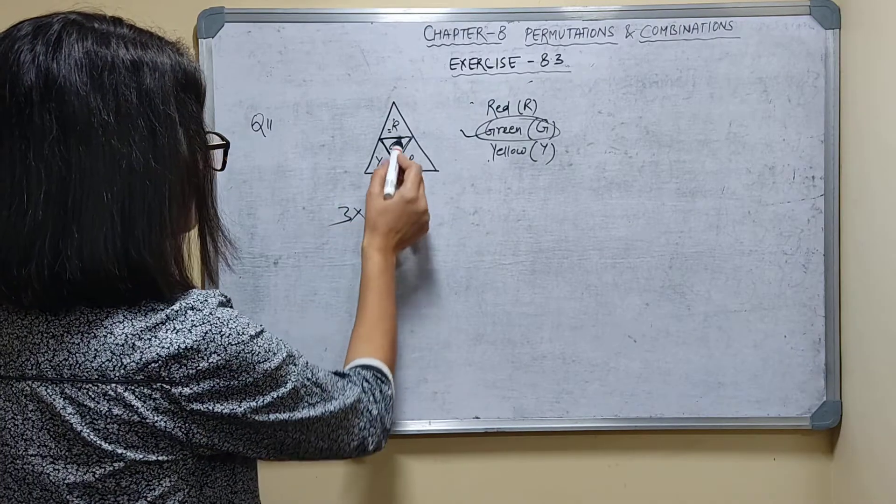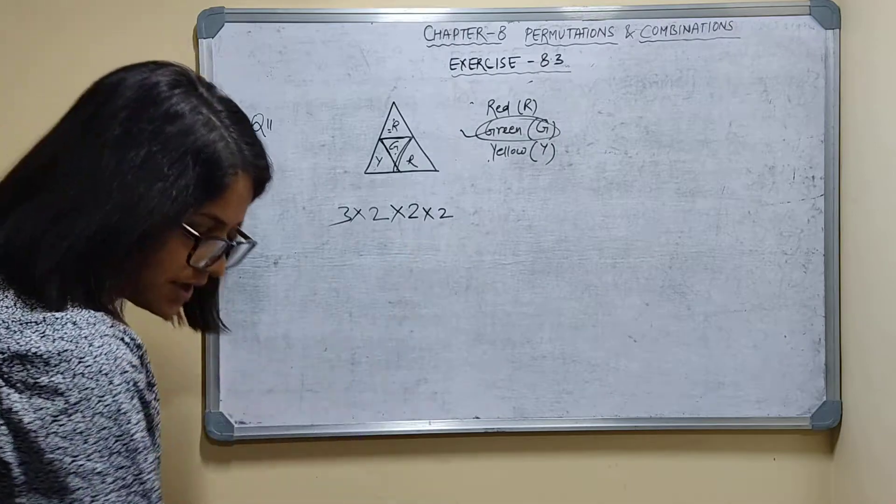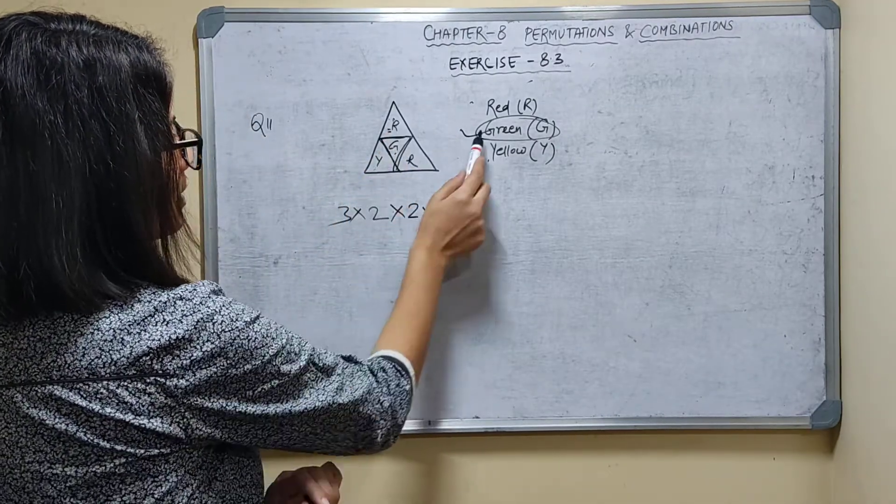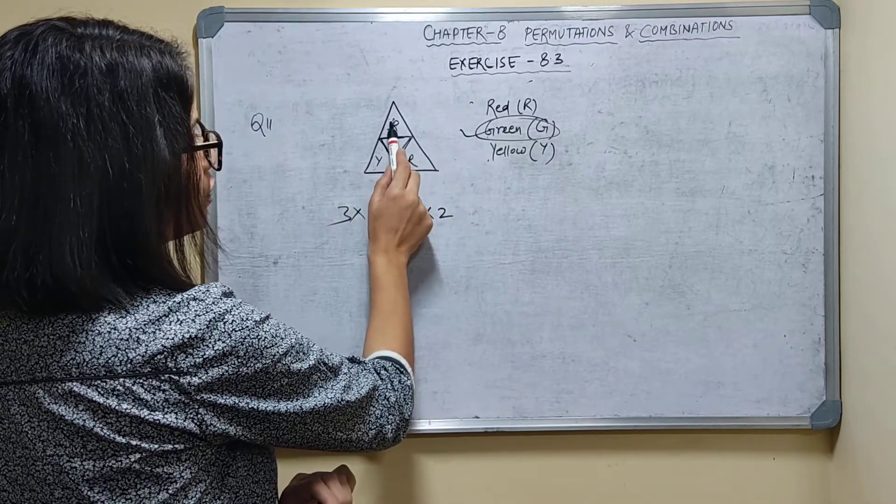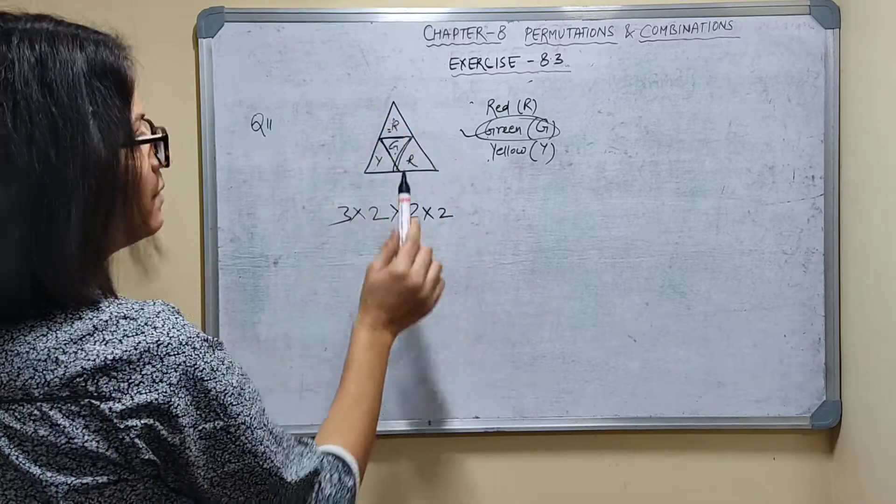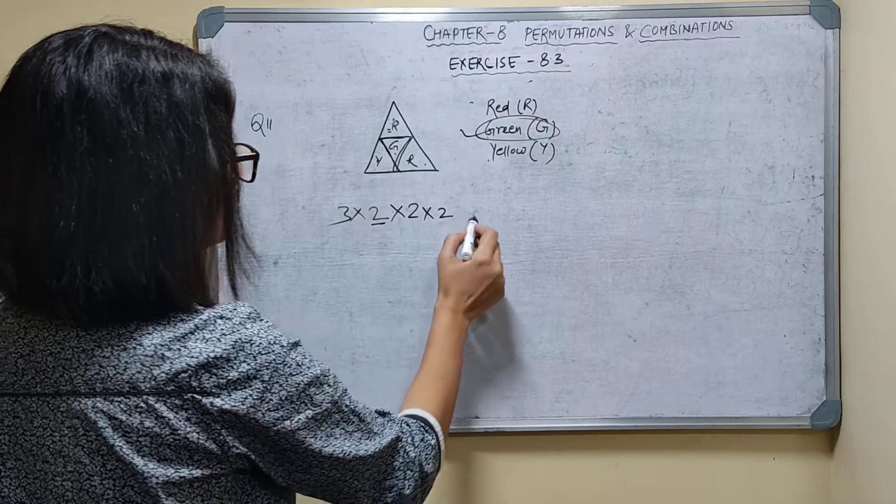Now here 2 ways are there. Here 2 ways are there. Here also 2 ways are there. If I am taking here 3 ways, green already I have used. If I use here also 3 ways, then if it is green here, the adjacent triangle will be same. So I have to exclude this green one. So here also 2 ways, 2 ways, 2 ways.